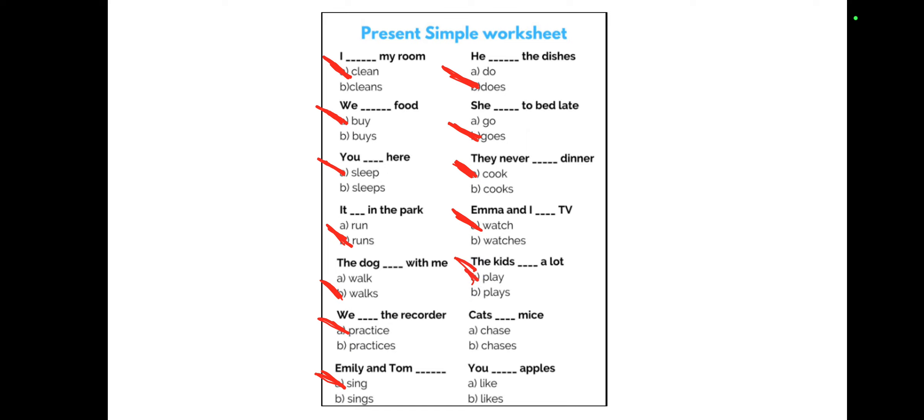Next, 'the kids' — 'kids' with an 's' means more than one, so use the base word with no addition of 's' or 'es.' Then 'cats' — more than one, so cats chase mice. Last question: 'you like apples' — remember I, you, we, they use the base word with no addition of 's' or 'es.' That's pretty much it for today. If you have a question please let me know, I'll try to answer as soon as possible. Thank you so much for watching.